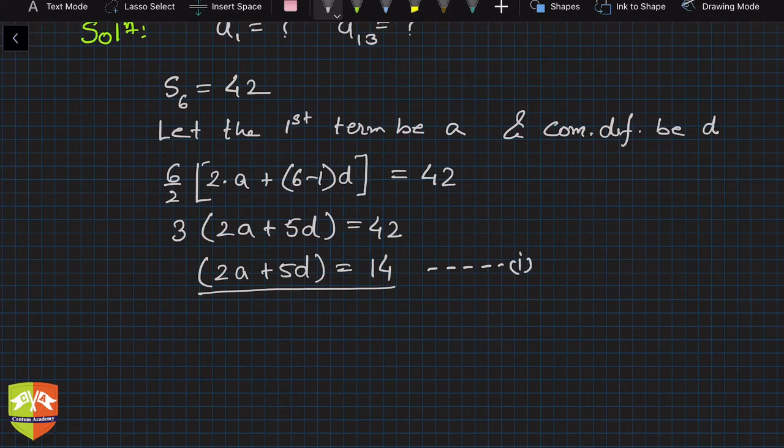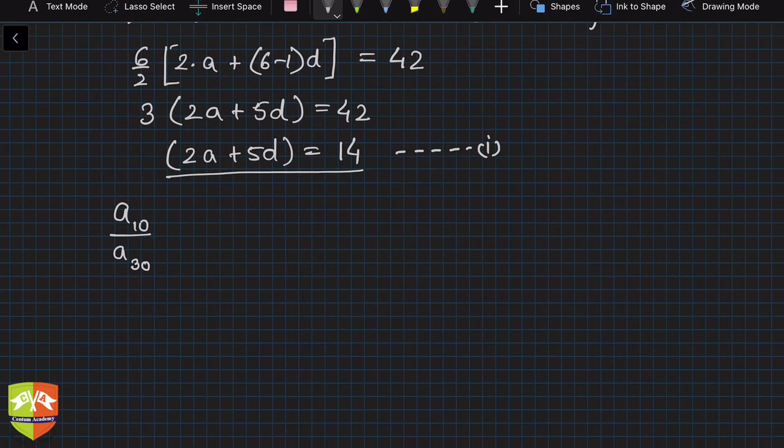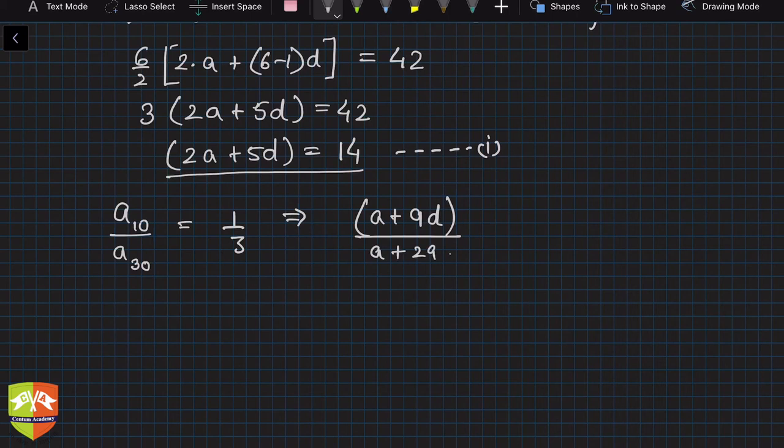Now second thing is given: ratio of a₁₀ to a₃₀. The ratio of 10th to 30th term is 1:3, so this will be 1/3. Now what is a₁₀? a₁₀ will be first term plus 10 minus 1 times d, so 9d is a₁₀. And a + 29d is 30th term. This equals 1/3.